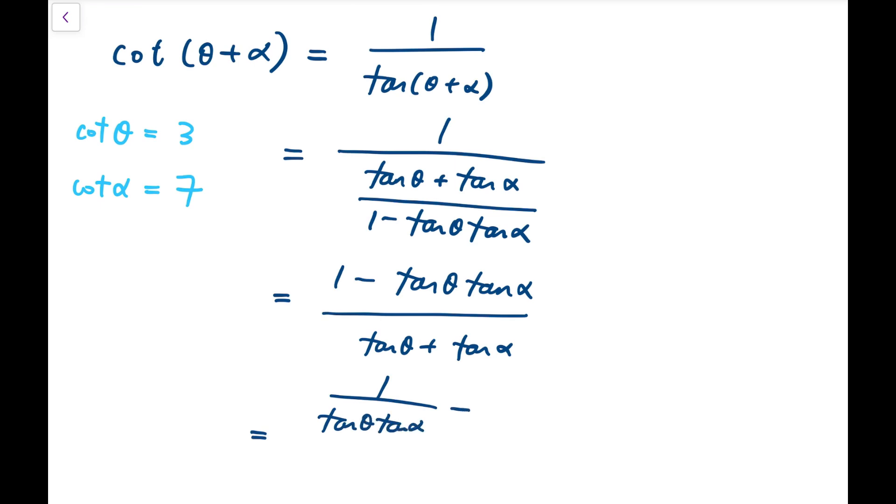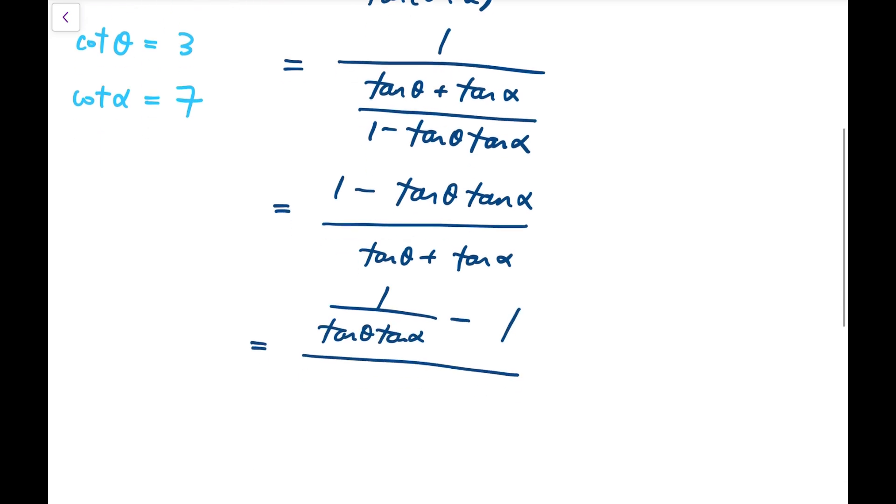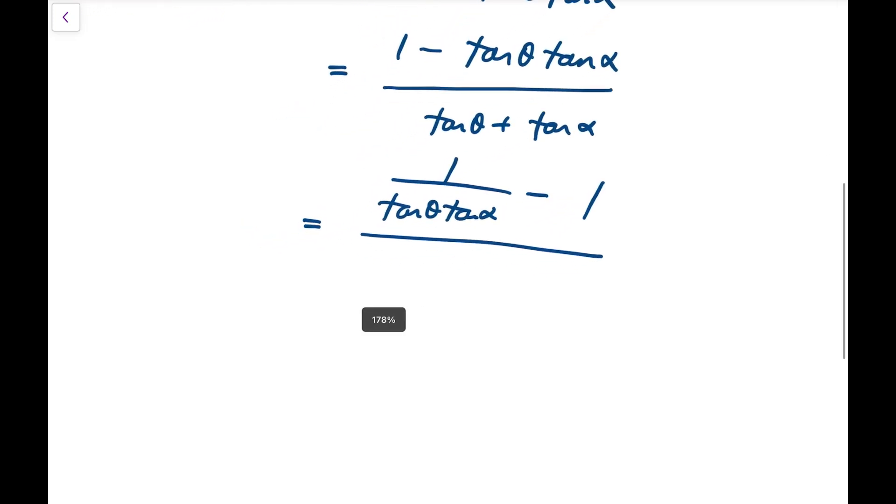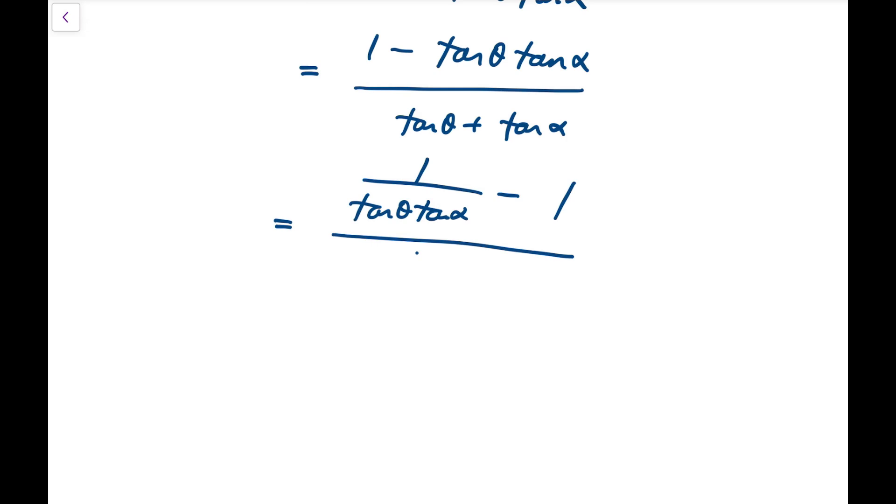So I'm going to get 1 over tan theta tan alpha, all subtracted by 1, divided by 1 over tan alpha plus 1 over tan theta.